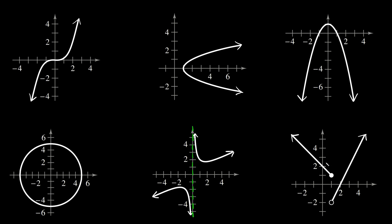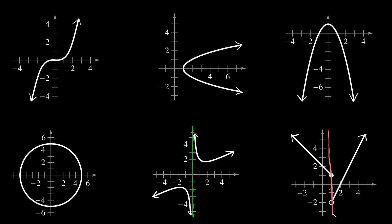For this last one, you can see we have two lines graphed. If we draw a vertical line through here, we only touch one line at a single point. However, if I draw a vertical line at x equals 1, it looks like it touches both of these linear graphs. But notice that one linear graph has a closed circle at x equals 1, and the other has an open circle at x equals 1. So really this vertical line only touches the one with the closed circle — it doesn't actually touch the graph with the open circle.